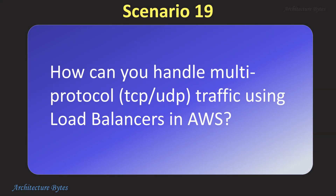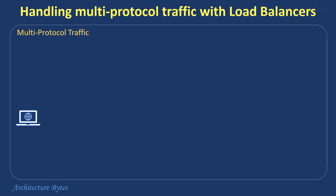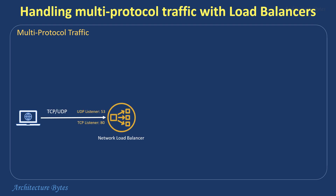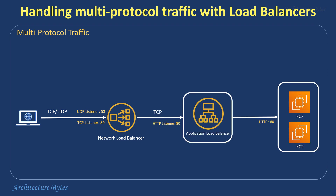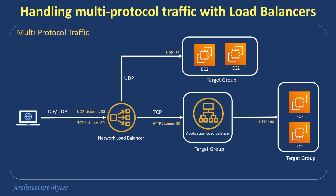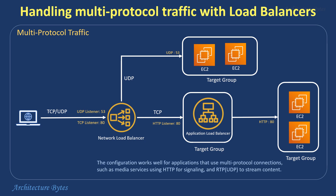How can you handle multi-protocol traffic using load balancers in AWS? This is an example of handling multi-protocol traffic using network and application load balancers. The network load balancer has two listeners: TCP on port 80 and UDP on port 53. The TCP listener forwards traffic to an application load balancer target group, while the UDP listener forwards UDP traffic to another target group with instances that accept UDP traffic. This configuration works well for applications that use multi-protocol connections, such as media services using HTTP for signaling and RTP for streaming content.